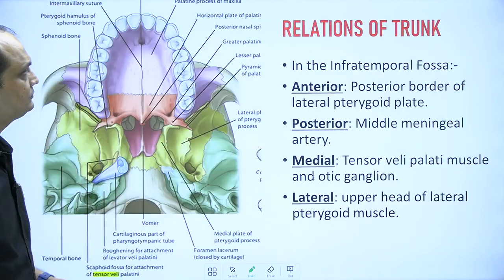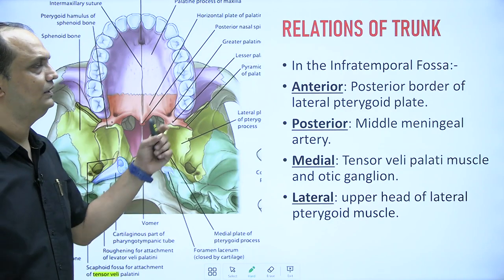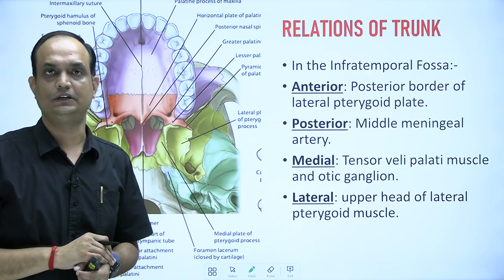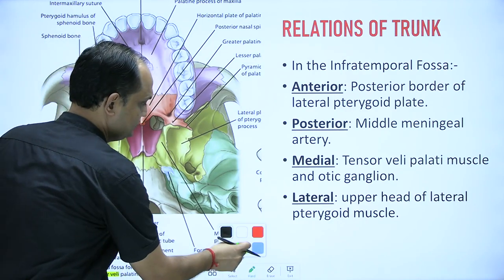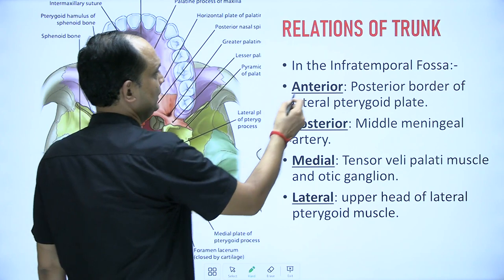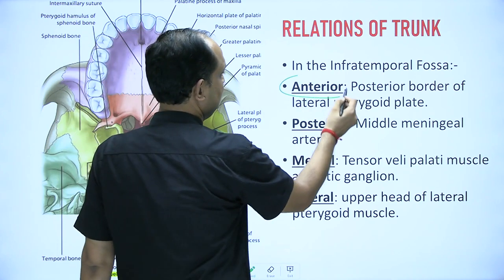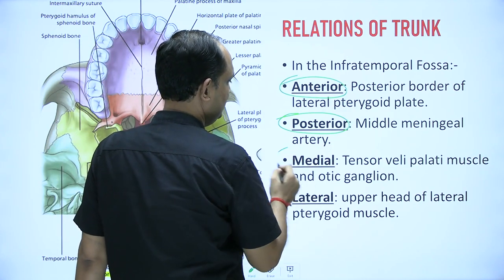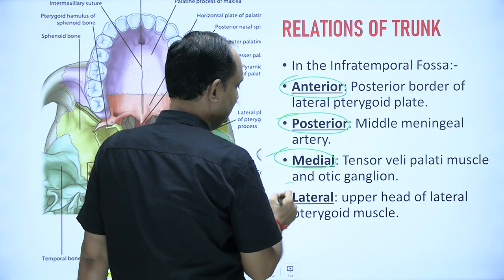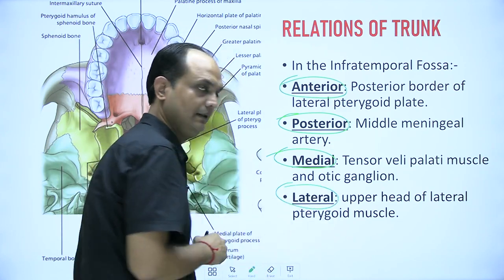Now let us look at the relations of the trunk. The relations are described in four directions: anteriorly, posteriorly, medially, and laterally.